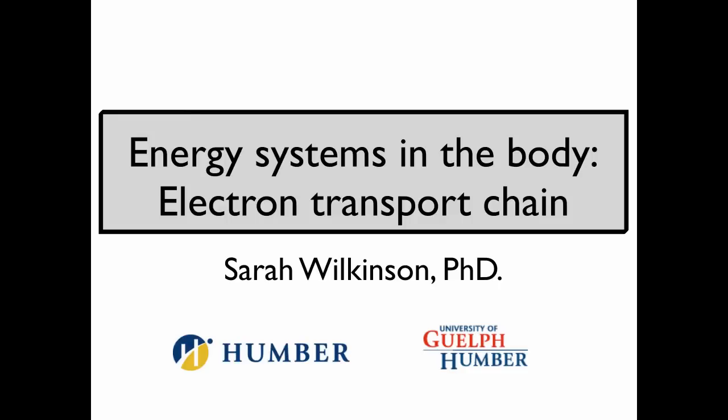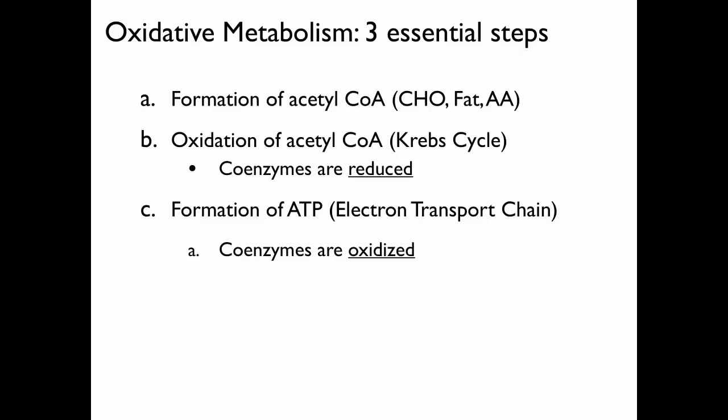In this video, I'm going to discuss how the electron transport chain can harness energy from NADH and FADH2 to form ATP. In several previous videos, I've gone through the steps of oxidative metabolism, including how acetyl-CoA is formed from glucose and fatty acids, how that acetyl-CoA is oxidized to form coenzymes NADH and FADH2, and finally, we're going to talk about how these coenzymes can be oxidized in the electron transport chain to harness the energy to form ATP.